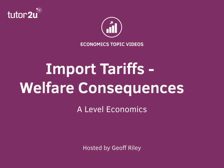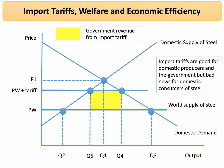In a previous video we worked through the basic analysis diagram of an import tariff. We took a market for steel where initially there's a high level of import demand and we added an import tariff to a world price shown in this diagram. Originally the world price was PW and imports were Q2 to Q3.